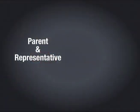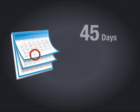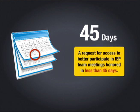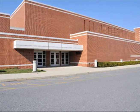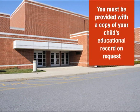You or your representative will be accompanied by an AACPS staff member when reviewing your child's records. All parental requests to review records must be honored within 45 days. A request for access in order for you to better participate in an IEP team meeting will be honored in less than 45 days. A building administrator must provide a copy of your child's educational record to you on request if failure to do so would effectively keep you from exercising the right to inspect and review your child's record.